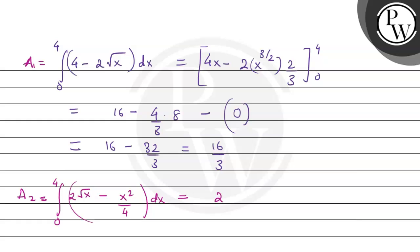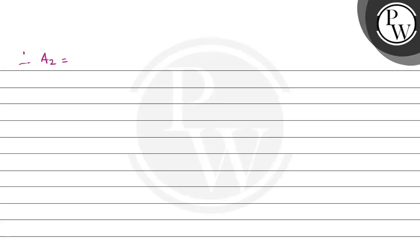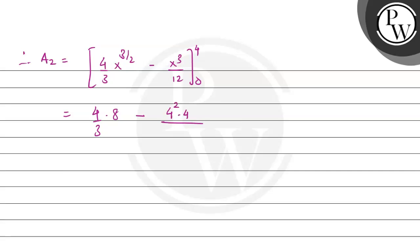The integral of 2 times square root x gives 2/3 times x to the power 3/2, minus x squared integration gives x cubed by 12, with limits 0 to 4. Rewriting: 4/3 times x to the power 3/2 minus x cubed by 12, over limits 0 to 4. Applying the upper limit: 4/3 times 8 minus 64/12, that is 32/3 minus 16/3, and the overall value is 16/3.